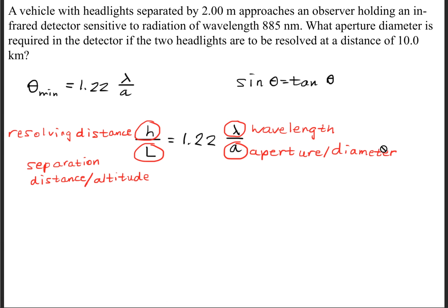Now let's go ahead and solve the question. The question is asking what aperture diameter is required in the detector if the two headlights are to be resolved at a distance of 10 kilometers. So we're going to be solving for our A variable, and we get that A is equal to 1.22 times lambda times L divided by H.